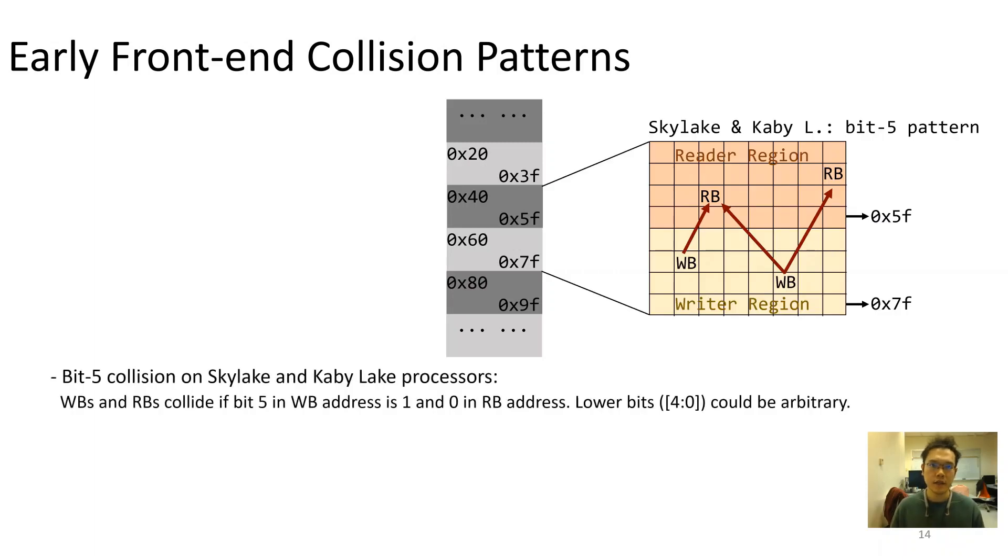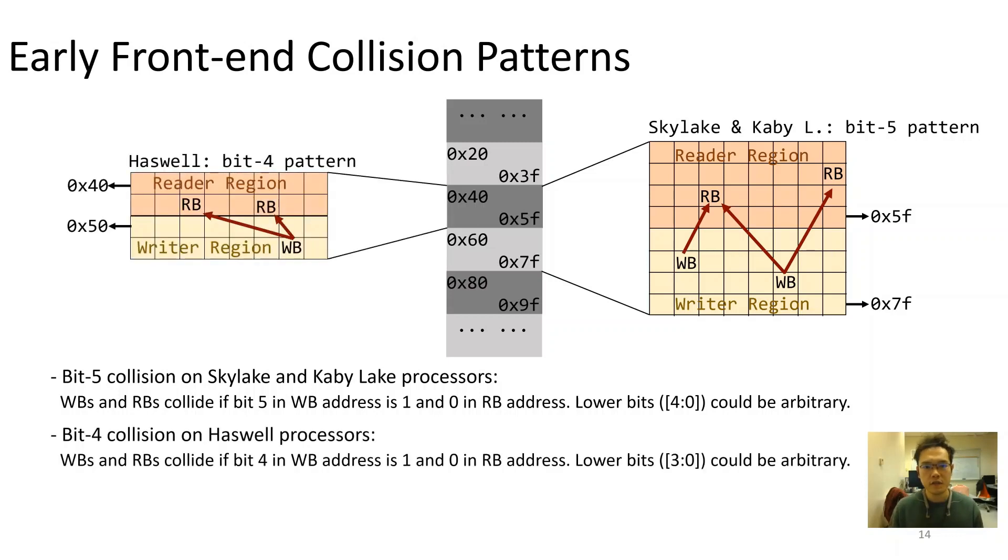We captured a more clear picture with scanning these anomalies among different chips. We find that, on Skylake and Kabylake, if we dissect the virtual memory address into 64-byte segment, in each segment, the branches in the higher half are all writer branches that could inject branch targets to poison any branches in the other half. We find a similar but slightly different pattern in Haswell, where each pair of writer region and reader region forms a 32-byte segment instead of 64.